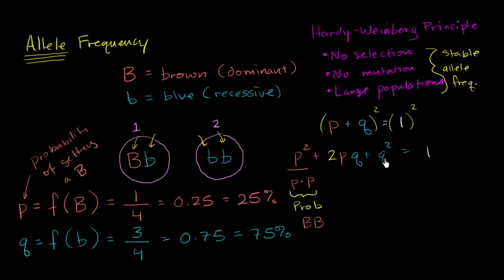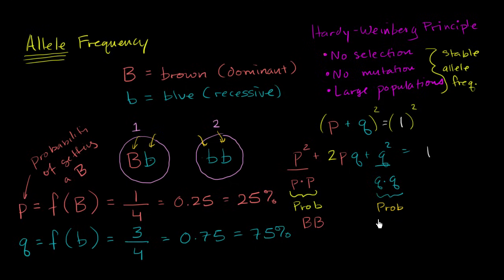By the same logic, Q squared is Q times Q. Q is the probability of getting one recessive allele, so Q squared is the probability of getting two recessive alleles — one from your mother and one from your father. This is the probability, if you were randomly born into this population, of getting two recessive alleles and being homozygous recessive.